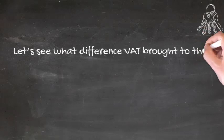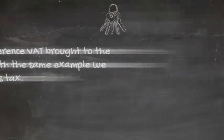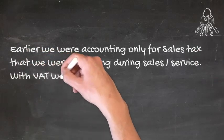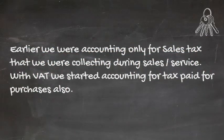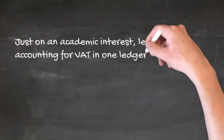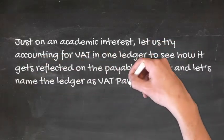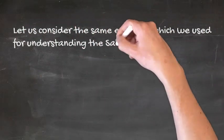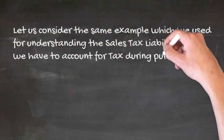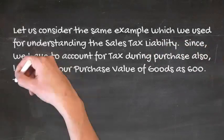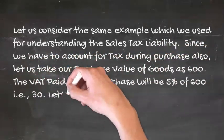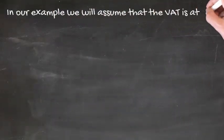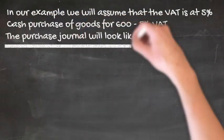Let's see what difference VAT brought to the way of taxation with the same example we referred to for sales tax. Earlier, we were accounting only for sales tax collected during sales or service. With VAT, we started accounting for tax paid on purchases also. Just on an academic interest, let us try accounting for VAT in one ledger to see how it gets reflected on the payable amount — let's name the ledger as VAT Payable Account. We will see the accounting entries of the purchase and sales transactions, assuming that the VAT rate is 5%.